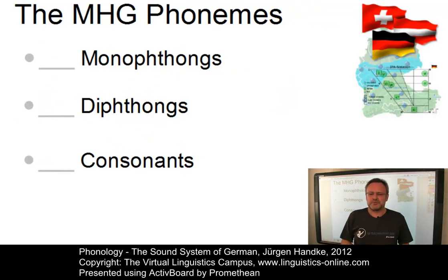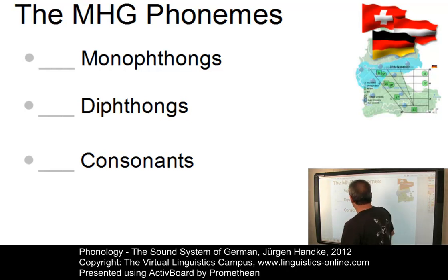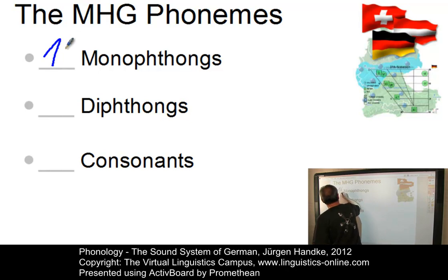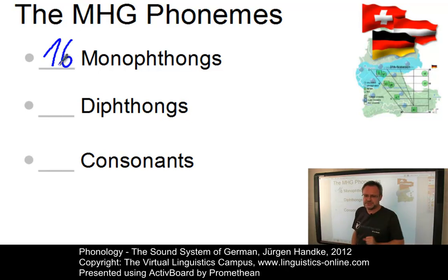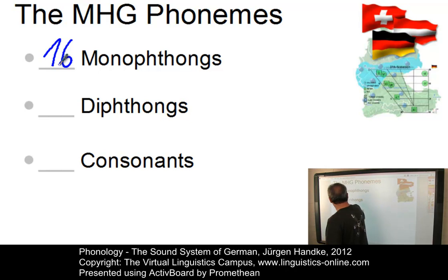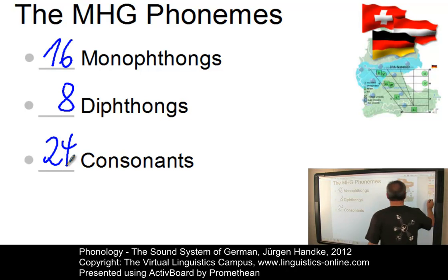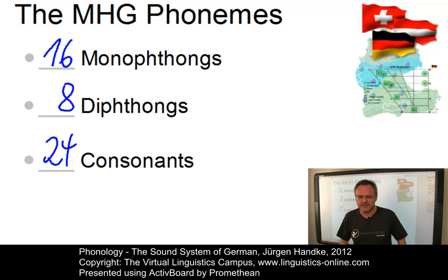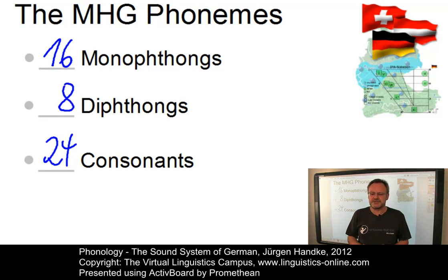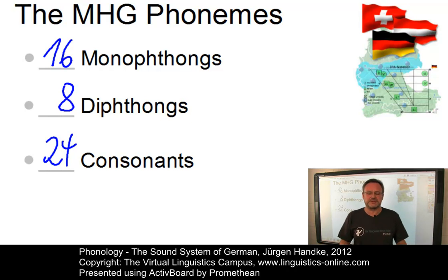In modern high German we can define a total of 48 phonemes. There are 16 monophthongs — it depends a little bit, as we will see in a second — 8 diphthongs and 24 consonants. The vowel phonemes differ among the varieties of German to a relatively large extent. The consonantal phonemes, by contrast, are almost identical in the varieties of German, yet their allophonic realization is different in a number of cases.